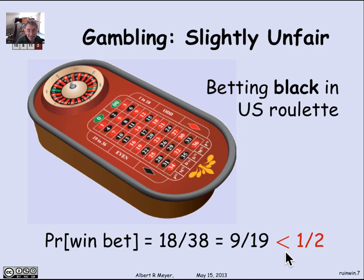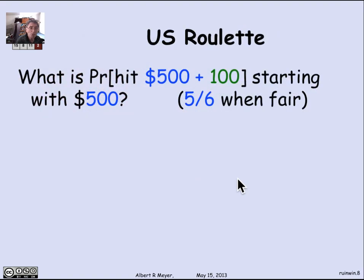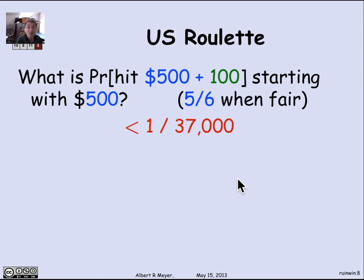This is not a grossly biased game for one bet. We can ask the same question: what's the probability of hitting a target of $600 if you have an initial stake of $500? In the fair game, that probability was 5/6. You might think that with this slightly unfair game the odds would be a little lower — but perhaps not dramatically. Well, it turns out they are dramatically lower. With an initial stake of $500 trying to win $100, there's one chance in 37,000 that you will actually manage to win $100 before you go broke.